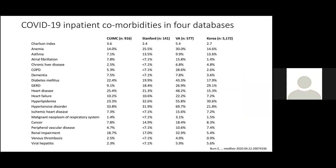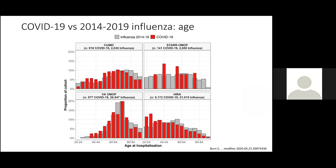Looking at comorbidities first — largely they look similar across the sites, except the VA, which is a biased sample of older men with kind of a bimodal distribution of young people and older men. But putting that aside, you can see similar proportions across the different sites. You can review this later or go to MedArchive for the details.